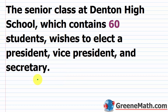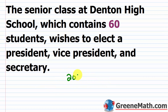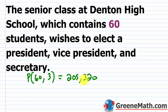On the calculator, you hit 60, then the NPR key, then 3, because there are three positions: president, vice president, and secretary. Running that calculation gives us 205,320. In proper notation, that's P(60, 3). Again, it's the NPR key on your calculator.